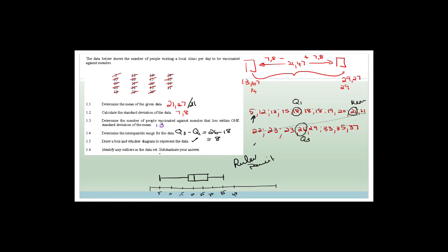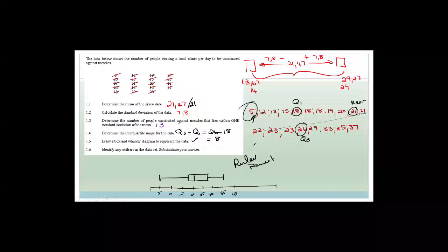Now it says identify any outliers in the data set and substantiate your answer. I would say 5 is definitely an outlier, for the simple reason that it is very far away from any of the other data, and this whisker makes it very long. Whereas 37 is quite close — 33, 35, 37 — so that's within the range. But definitely 5 is the outlier.